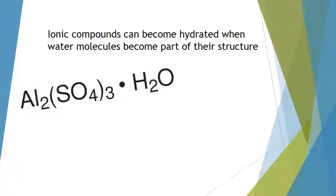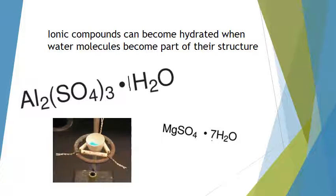Here's an example here. This would be aluminum sulfate, and currently it's got one water molecule attached to its structure. Magnesium sulfate, this one has seven water molecules attached to it, and that would be a heptahydrate. And they often have color when you use them in the lab.